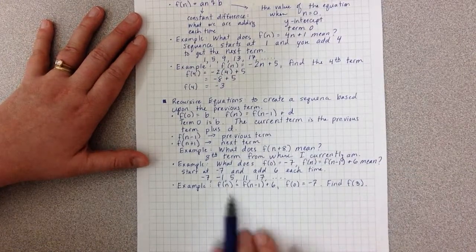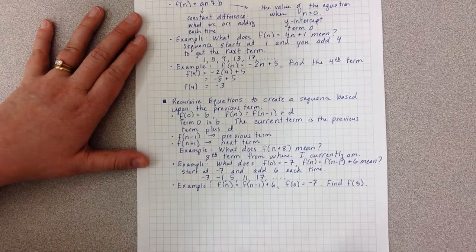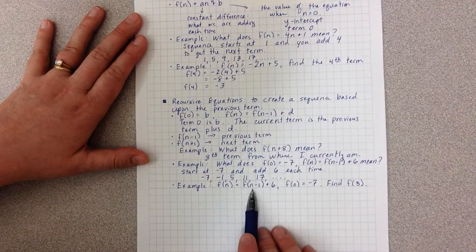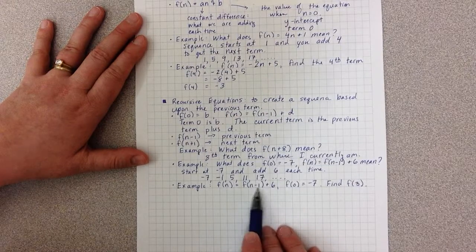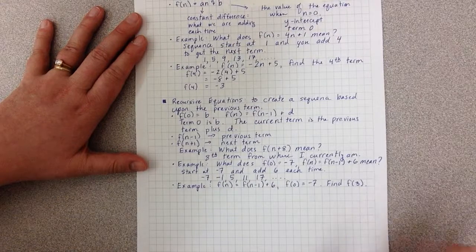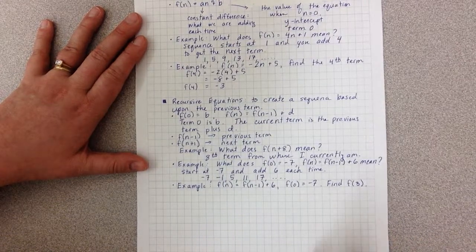I can't simply plug in f(3) here because it means I would have to know f(2). But I don't know f(2), which means then I'd have to find f(1) and f(0). So it means I'd have to keep going backwards.